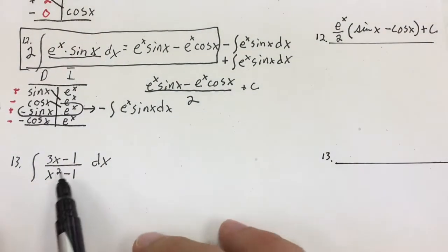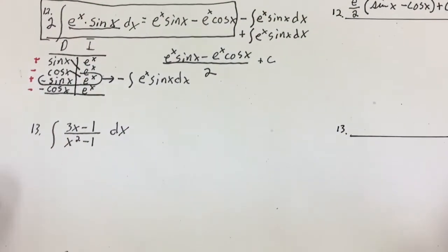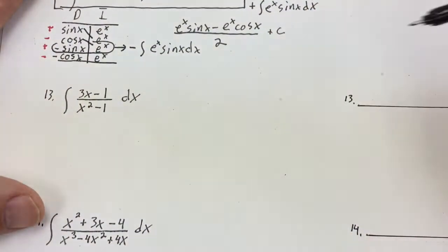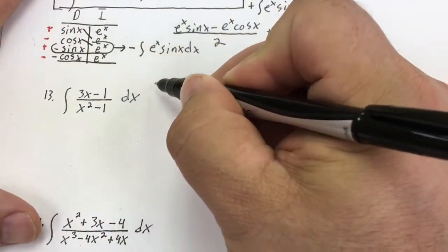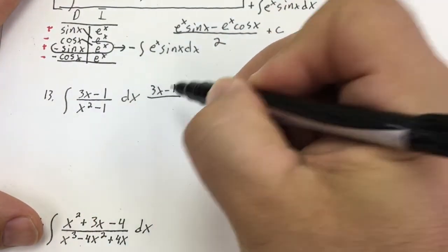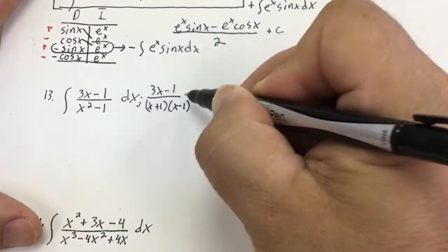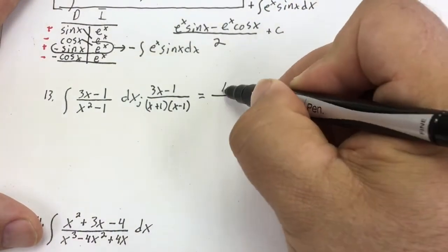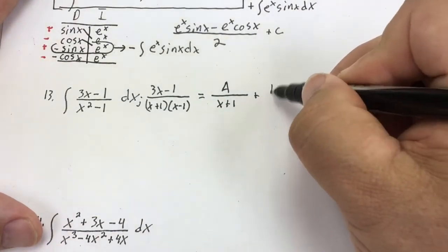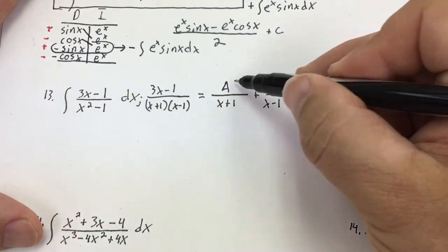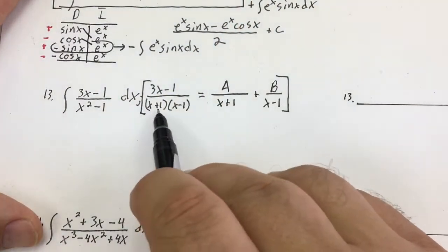Number 13 is a little tough. I don't think I can do u-sub. What I have to do is partial fraction decomposition. I'm going to factor the bottom, so this gives me (3x − 1) over (x + 1)(x − 1). That's going to equal some value over (x + 1) plus some value over (x − 1), and I have to figure out what these values are. I'll multiply everything by the common denominator x² − 1.